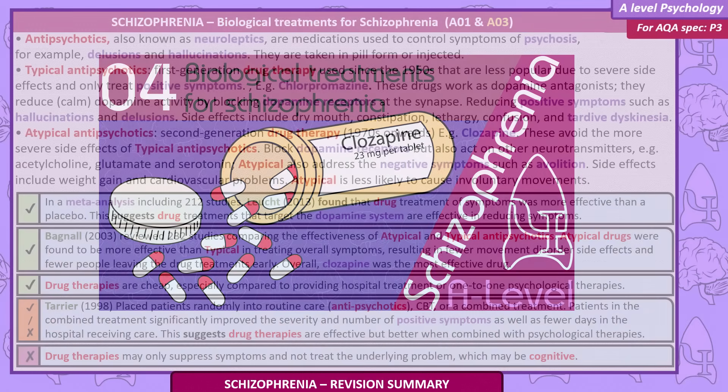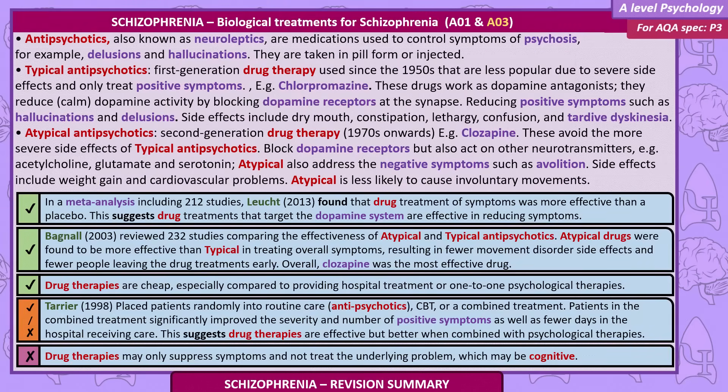Biological treatments for schizophrenia. Antipsychotics, also known as neuroleptics, are medications used to control the symptoms of psychosis — for example, delusions and hallucinations. They are taken in pill form or injected. Typical antipsychotics are first-generation drug therapy used since the 1950s, less popular due to severe side effects and because they only treat positive symptoms — for example, chlorpromazine. These drugs work as dopamine antagonists, reducing dopamine activity by blocking dopamine receptors at the synapse.